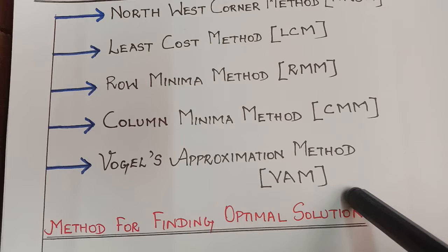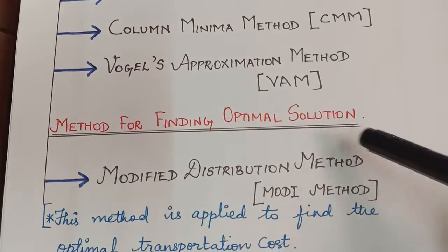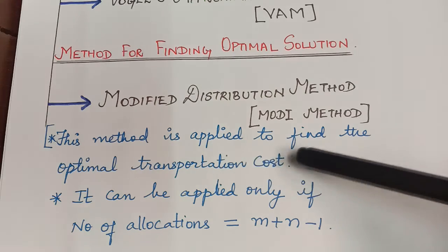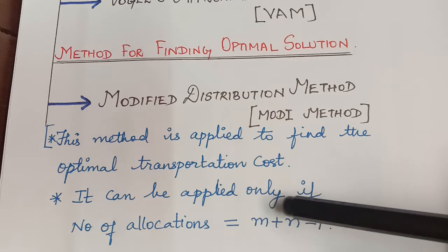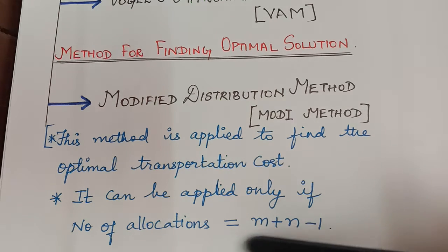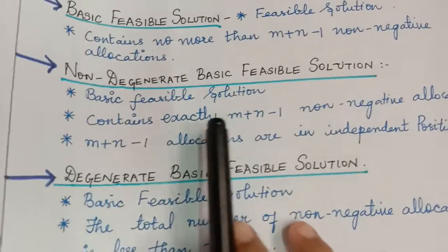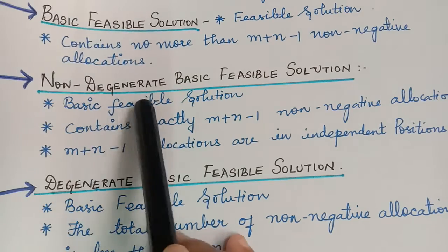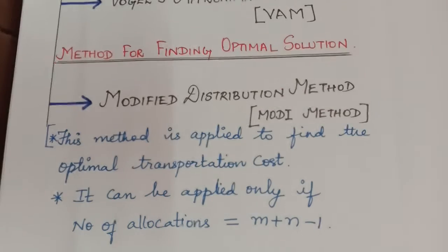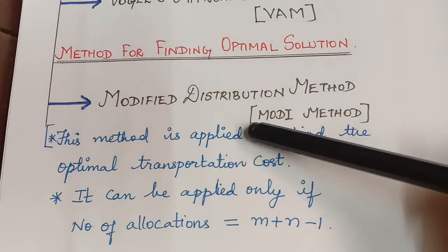After finding the initial basic feasible solution, we would like to know whether that same solution is the optimal solution. The method for finding the optimal solution is the Modified Distribution Method, known as the MODI method. This method is applied to find the optimal transportation cost, and it can be applied only if the number of allocations is equal to M plus N minus 1 — that is, it must be a non-degenerate basic feasible solution. The method for finding the optimal solution is the MODI method.